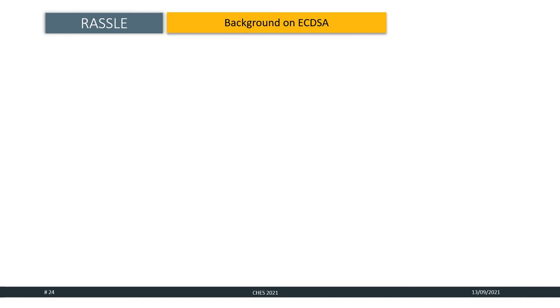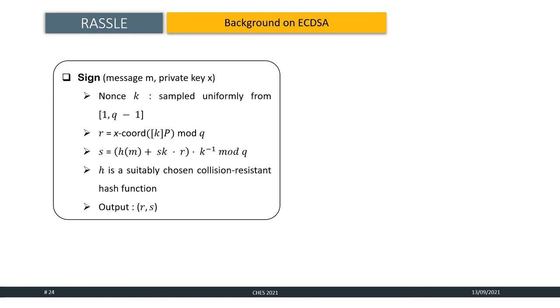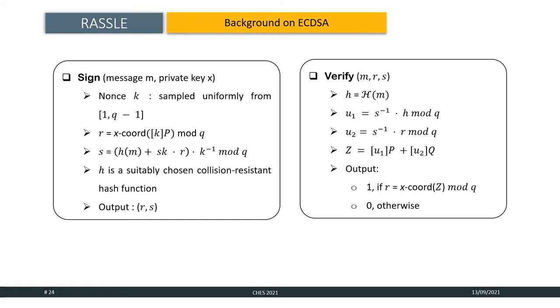Before moving on to our next attack, we will provide a brief background on ECDSA. ECDSA typically uses an elliptic curve with a base point P of prime order Q and consists of two parts. One is a signing operation, where a nonce K is sampled uniformly in the range 1 to Q-1 and outputs the signature R, S, and the other part is a verify where given a signature R, S and a message M. It computes the hash and finally outputs 1 if the x coordinate of Z modulus Q is equals to R or 0 otherwise.